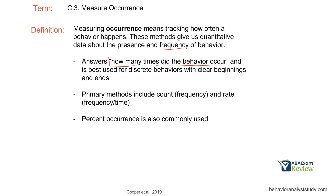You want to look for 'how many' when thinking about occurrence. When we think about time — which we'll get to — we're going to look at 'how long.' With occurrence, we're thinking 'how many.' You also want behaviors with clear beginnings and clear ends. If the behavior is ambiguous or it's unclear when it starts and stops, then collecting occurrence data can be difficult. We're going to be using count, which is our frequency, and rate, which is just frequency over time. You can also use percent occurrence, which is very similar to count.